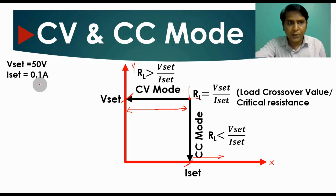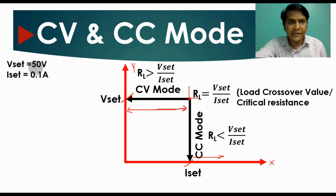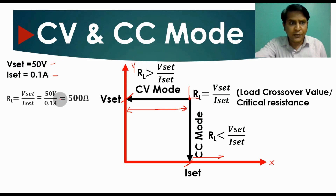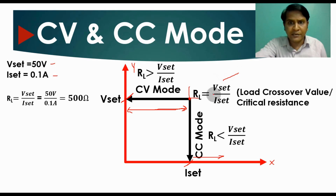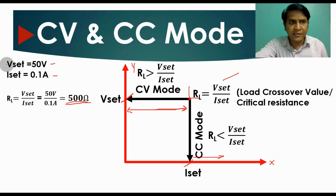Now I will consider a numerical example to explain how a power supply enters CV mode or CC mode. Let us say V-set equals 50 volts and I-set equals 0.1 ampere. To calculate the critical resistance: R_L = V-set / I-set = 50V / 0.1A = 500 ohms. So for this specification, the critical resistance value is 500 ohms.